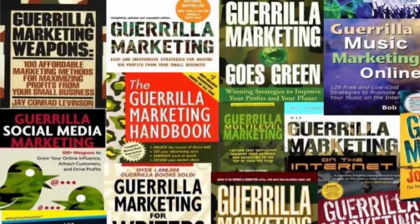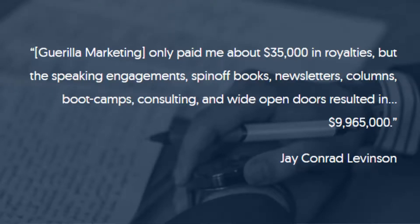Now that you know the man behind the video, let's talk about you making money off your book. Let's answer the book revenue question once and for all, starting with guerrilla marketing author Jay Conrad Levinson. Guerrilla marketing only paid me about $35,000 in royalties, but the speaking engagements, spinoff books, newsletters, columns, boot camps, consulting, and wide open doors resulted in $9,965,000.